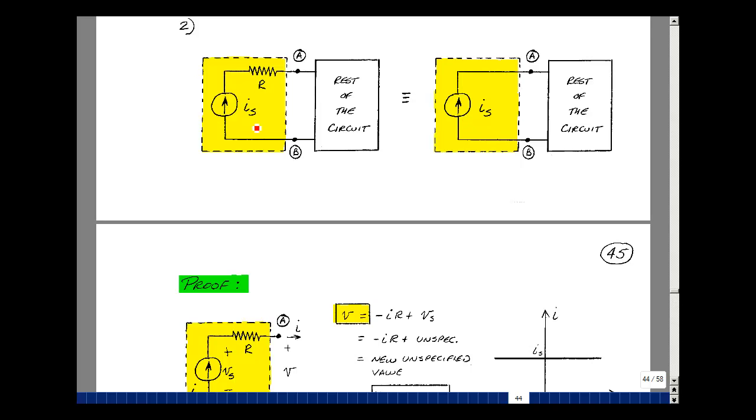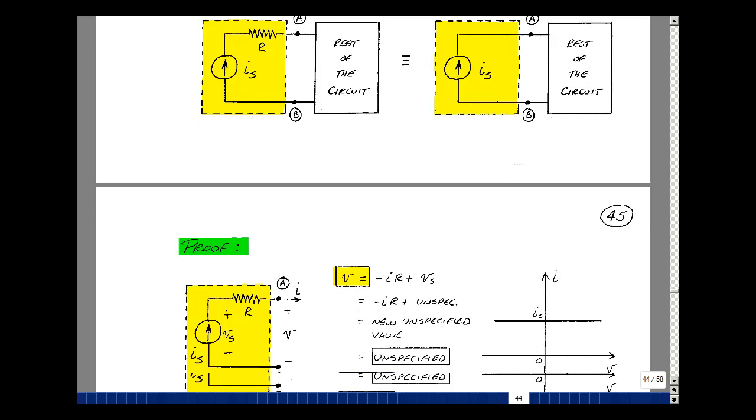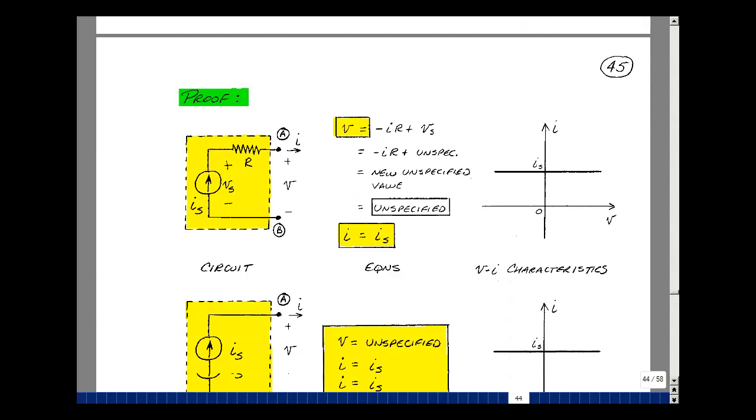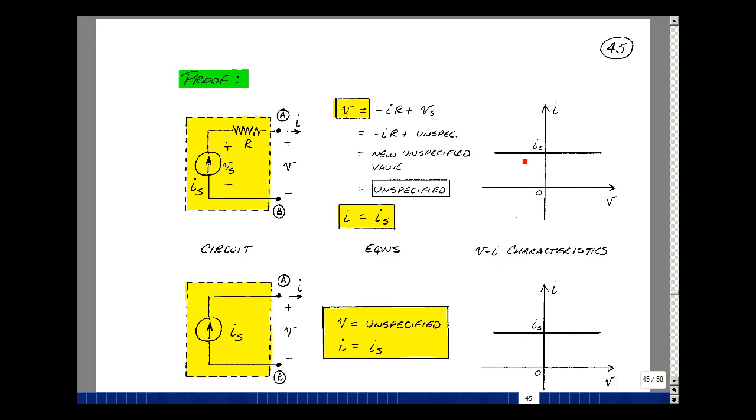Now these two boxes are not equal to each other, but they create the same effect at the outer terminals. And that's what it means to be equivalent. So again, let's see if we can show that this is true by plotting or calculating all of the voltages and currents that can occur at the terminals A and B. So again, I'll sign the voltage here as V, and the current leaving as I.